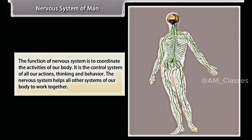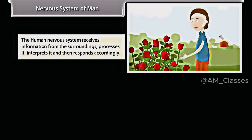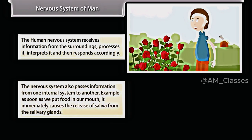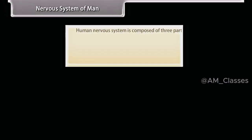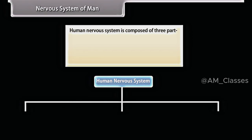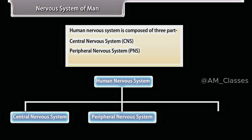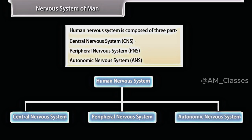The function of the nervous system is to coordinate the activities of our body — it is the control system of all our actions, thinking and behavior. The nervous system helps all other systems of our body to work together. The human nervous system receives information from the surroundings, processes it, interprets it and then responds accordingly. It also passes information from one internal system to another — for example, as soon as we put food in our mouth, it immediately causes the release of saliva from the salivary gland. The human nervous system is composed of three parts: central nervous system (CNS), peripheral nervous system (PNS), and autonomic nervous system (ANS).